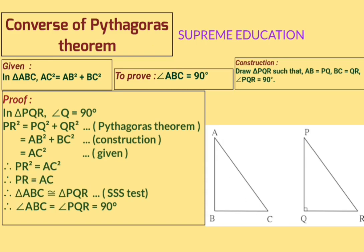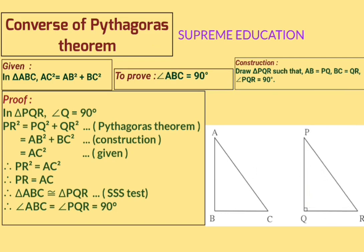Now in triangle ABC and triangle PQR: AC = PR (just proved), AB = PQ (construction), and BC = QR (construction). All three sides of triangle ABC are congruent to the corresponding three sides of triangle PQR. Hence by the SSS test (side-side-side), triangle ABC is congruent to triangle PQR.